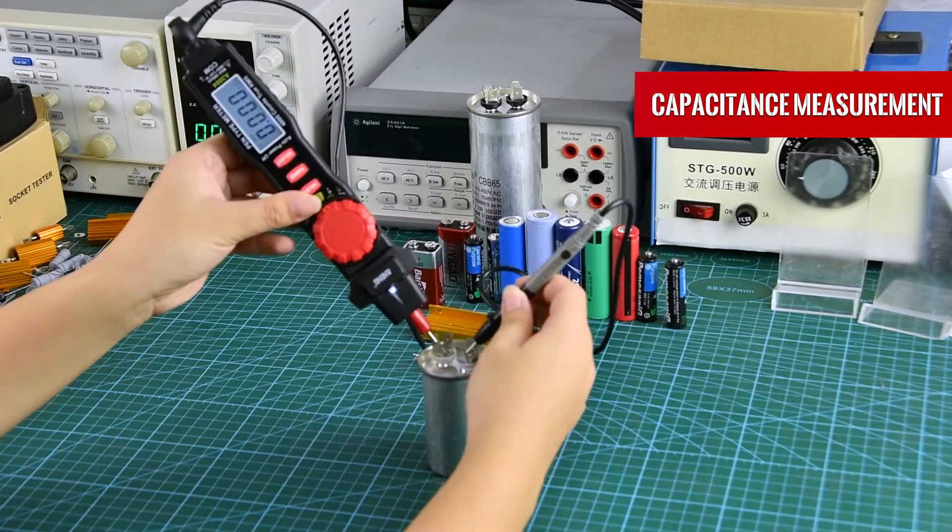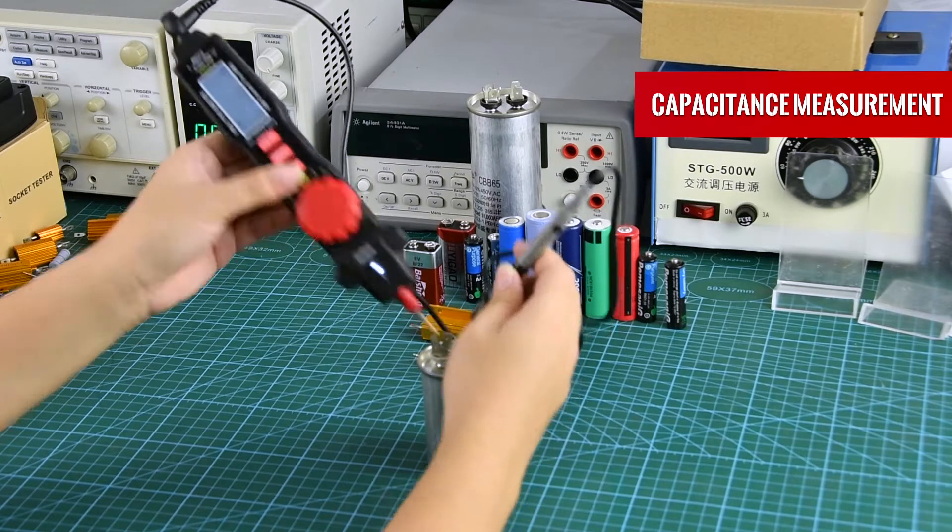Capacitance measurement: place the stylus on the capacitor for measurement.